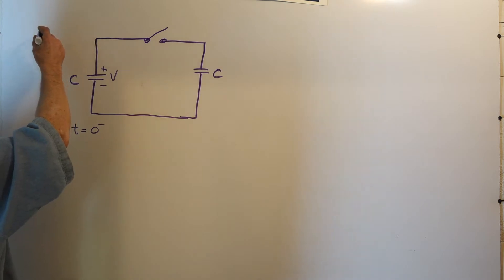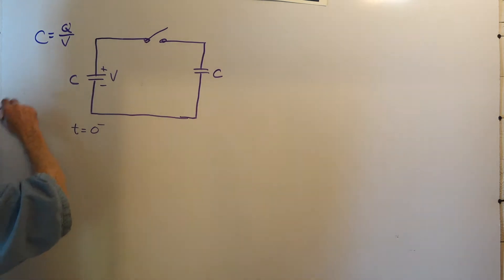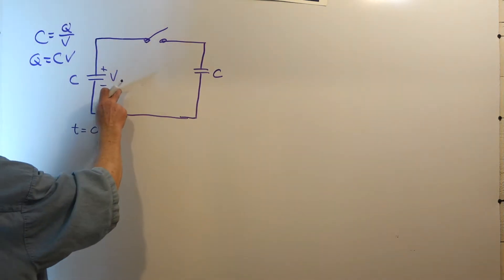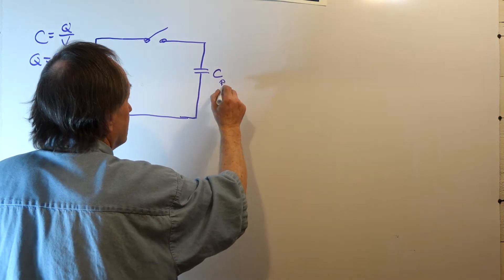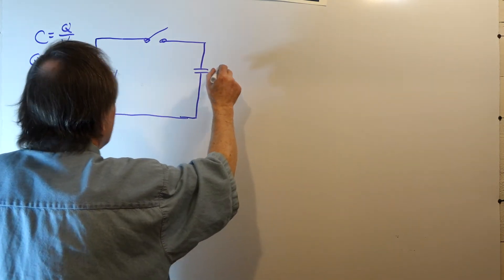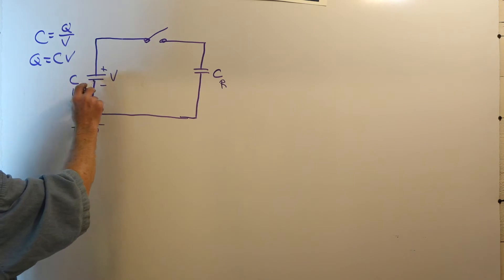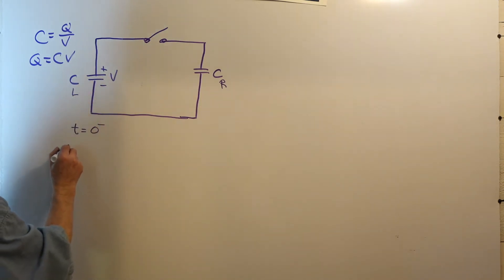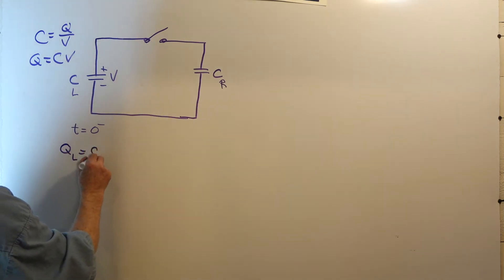Given the capacitance relationship, by definition, capacitance is defined as Q over V, so Q equals CV. We'll call this the left capacitor and this the right capacitor — but they both have value C. So at T equals zero minus, we've charged the left capacitor up to voltage V, so the charge on the left is just CV — we'll call it Q.